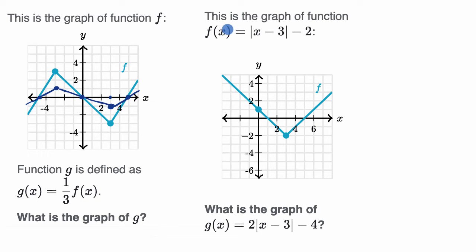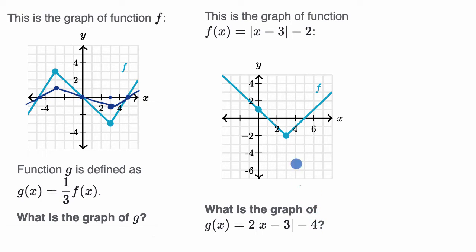Here we're told this is the graph of f(x), defined by a given expression. What is the graph of g(x)? Pause this video and think about it. The key realization is that g(x) looks like you take all the terms of f(x) and multiply by two — multiply the absolute value by two, and multiply the -2 by two. So g(x) = 2·f(x).